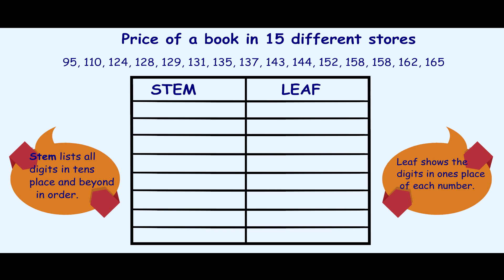Let us consider this set of data, which represents the price of a book in 15 different bookstores. In this case, we can use the digits of the tens and the hundreds place of each number to make the stem. Since the minimum value in our data set is 95, we'll begin our stem from 9, and the next stem will be 10, followed by 11, 12, 13, 14, 15, going on till 16, because the maximum value in our data set is 165.